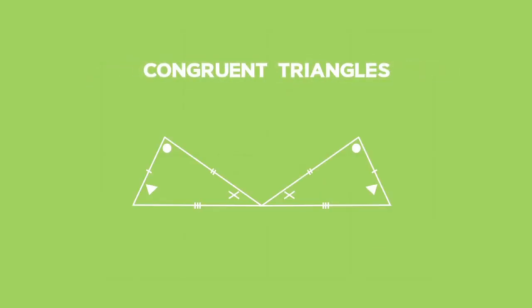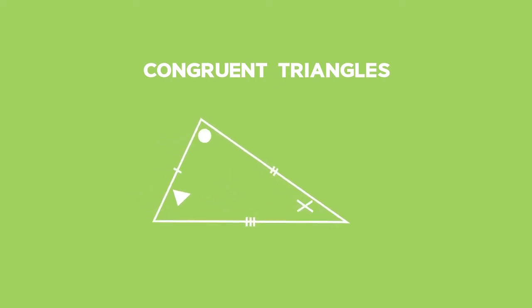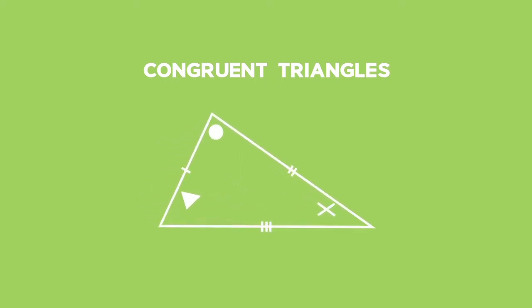Congruent triangles. Two triangles are congruent if the corresponding angles are equal and the corresponding sides are equal.